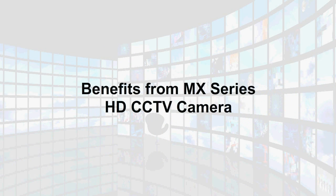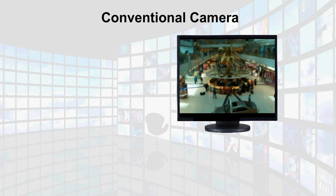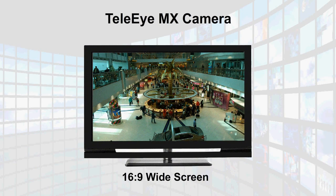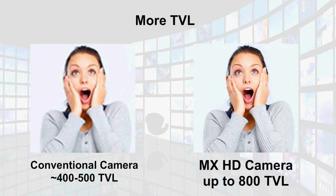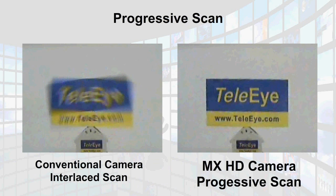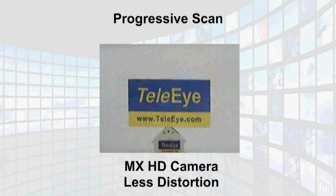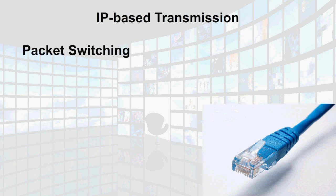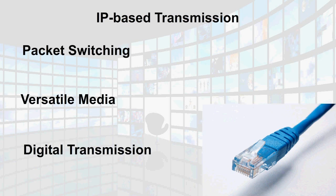TeleEye's HD CCTV solution offers many benefits. Traditional cameras record video at a 4x3 aspect ratio, but TeleEye's HD CCTV solution provides you with 33% more viewing area. TeleEye's HD CCTV resolution is up to 800 TVL, giving you superb video quality. Its progressive scanning feature allows for almost distortion-free viewing and reduced jaggedness. IP-based transmission provides better utilisation of network resources with high noise immunity.